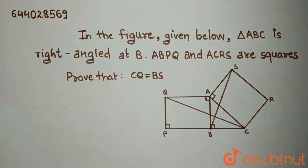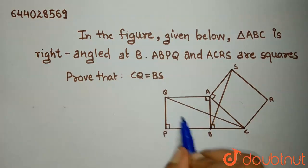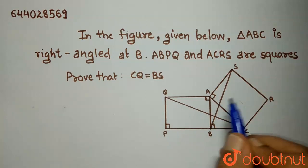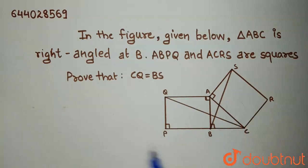In order to prove that, let's see how to solve. ABC is given to be a right-angled triangle. ABPQ is a square and ACRS is also a square.